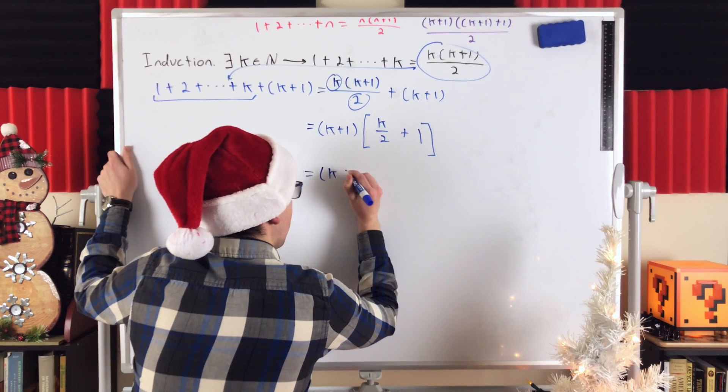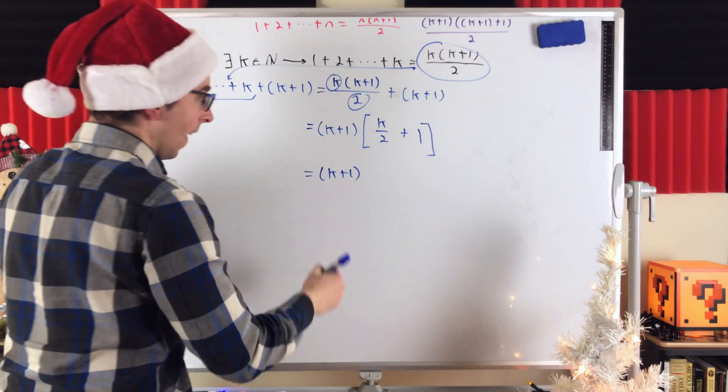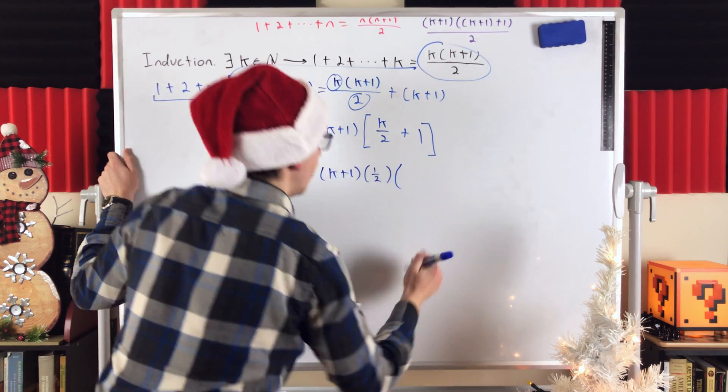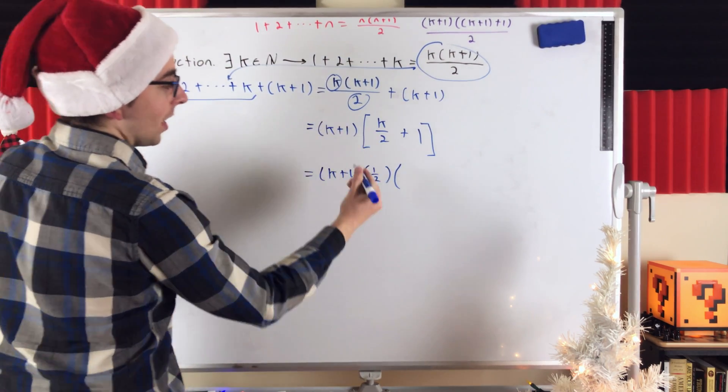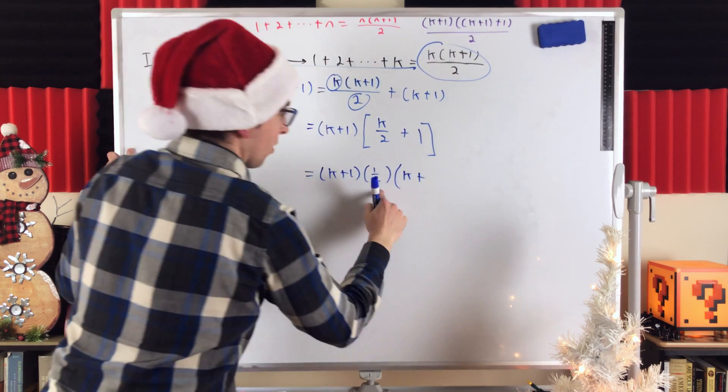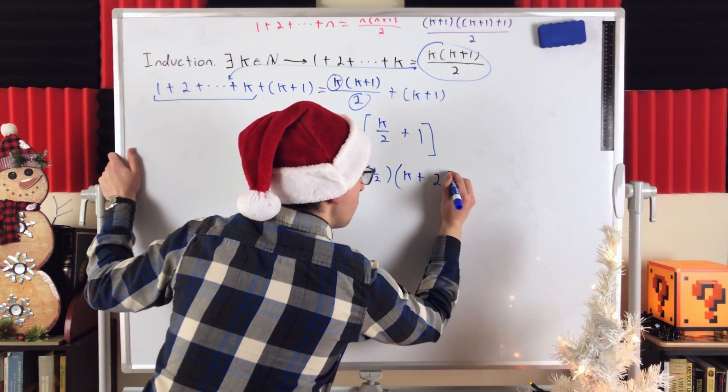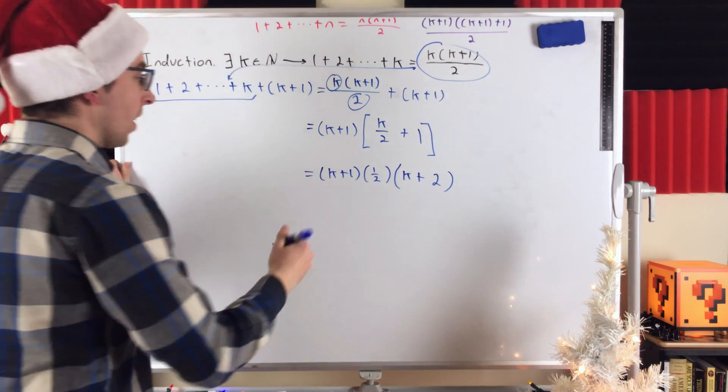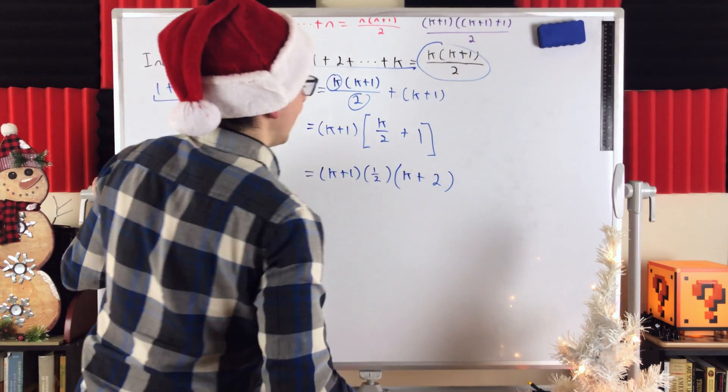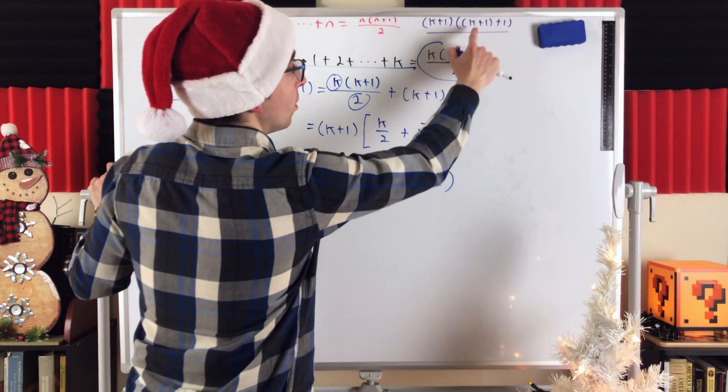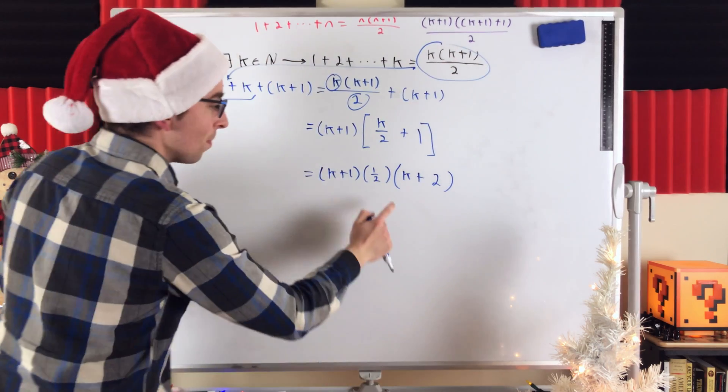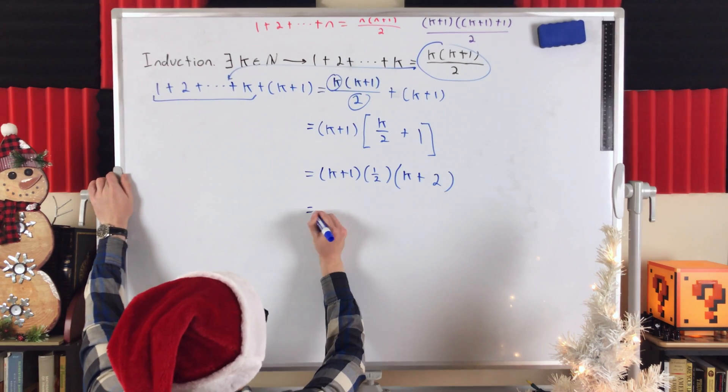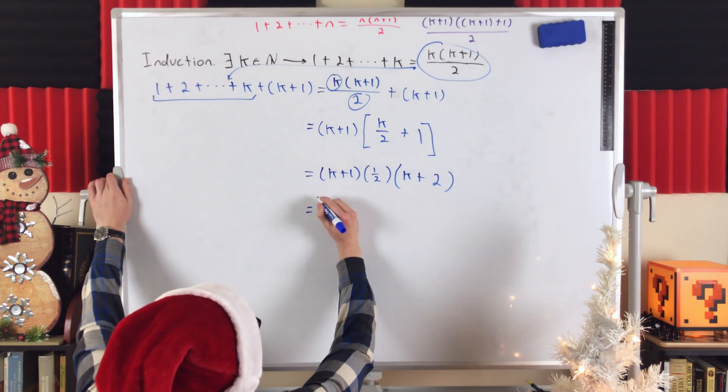We've got our factor of k plus 1, and then we factor out 1 half out of that. So, that's 1 half. And then, when we factor 1 half out of k over 2, we're left with k. Factor 1 half out of 1, we're left with 2, because there are 2 halves in 1. And then, we can just rewrite this a little bit more. Clearly, this is our final answer, right? k plus 1 times k plus 2. k plus 1 times k plus 2 times 1 half, which is the same thing as dividing by 2. Now, we'll just rewrite it so it looks more like what we want it to look like.